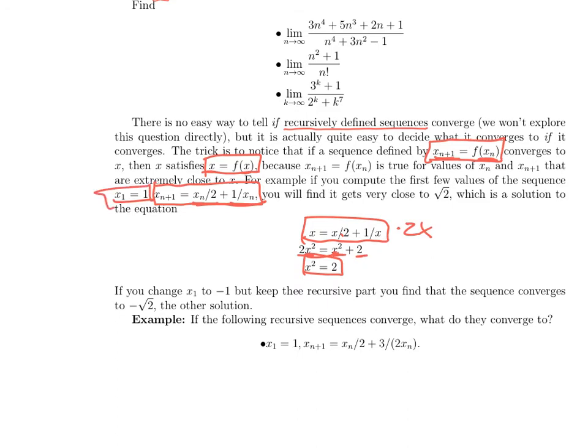If you try different values for x_1, what you will find is if you start at any positive x_1, this whole sequence is positive and you approach square root of 2. If you start at any negative x_1, the whole sequence is negative and you approach minus square root of 2.